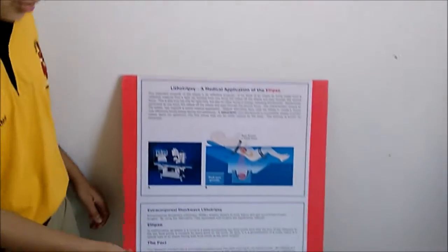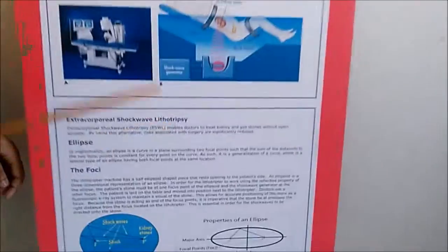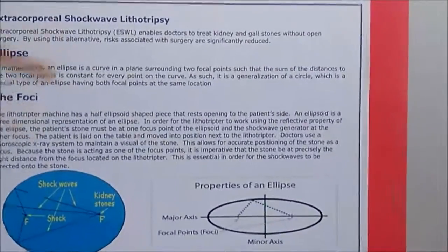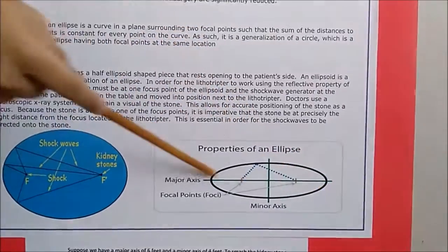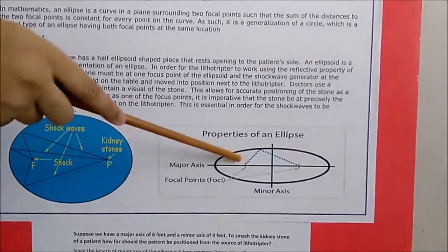So first let us look at what is an ellipse. An ellipse is a generalization of a circle. It has a minor axis and a major axis. It has two focal points.